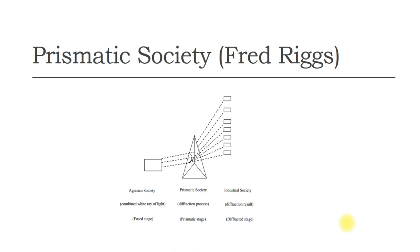The model society which is intermediate between two polar types is called prismatic. It is called prismatic because it is similar to light being passed through a prism which fuses light, becomes refracted.